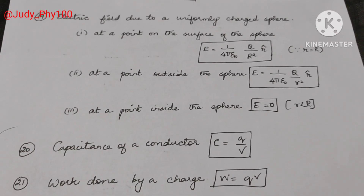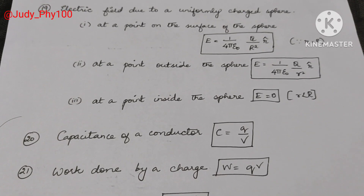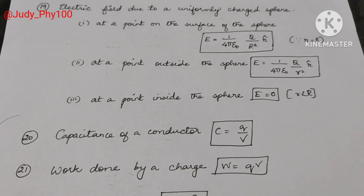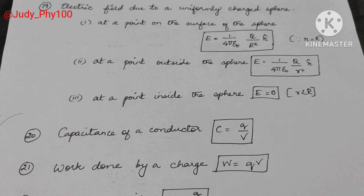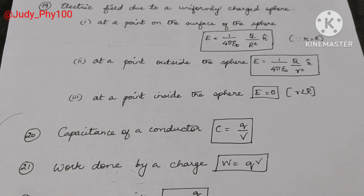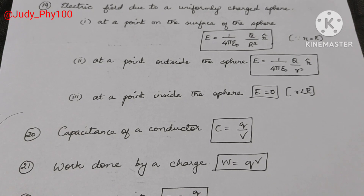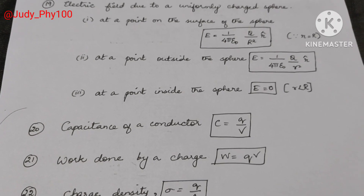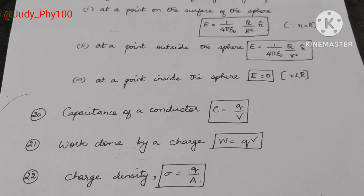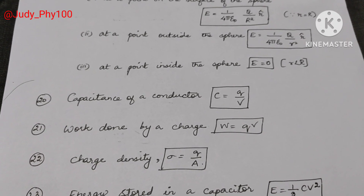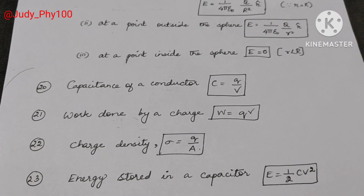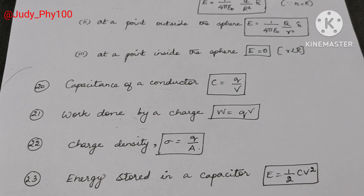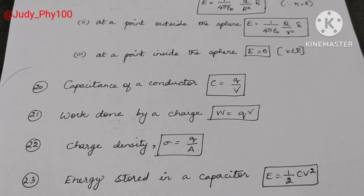Capacitance of a conductor: C is equal to Q divided by V. Work done by a charge: W is equal to Q into V. Charge density: sigma is equal to Q divided by A, where A is the area. Energy stored in a capacitor: E is equal to half CV squared.